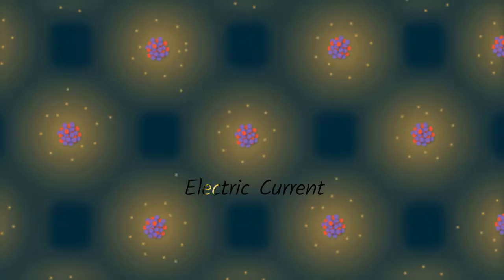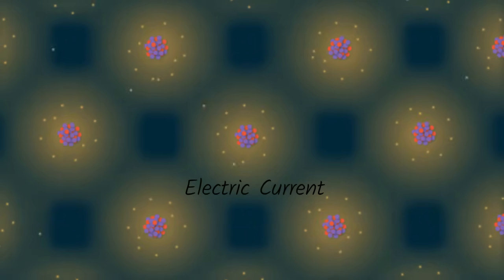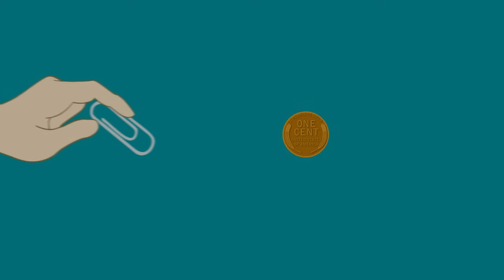Electrons can move in all materials, but they can move through some materials better than others. If electrons can move quickly and easily in a material, then that material is a conductor.